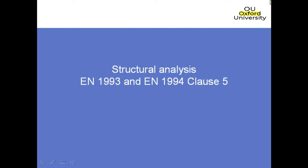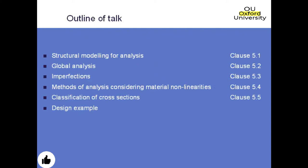We're going to follow the numbering system in Clause 5 of Eurocode 3. We'll look at general requirements for structural modeling, then requirements for global analysis, imperfections — very similar to Eurocode 2 — methods of analysis considering material non-linearities, which is really just treating cracking effects in a linear elastic way, same as in BS5100. We'll finish with classification of cross-sections, which is a slightly different approach in the Eurocodes for bridge designers, though building designers will find it the same as BS5950.